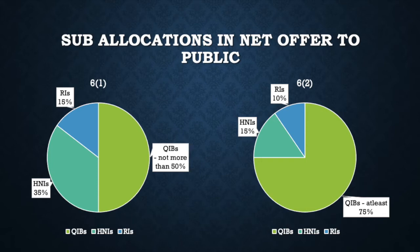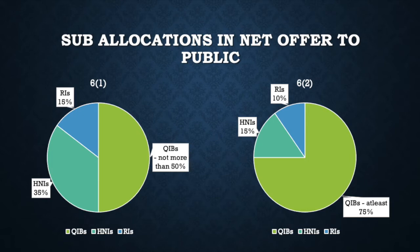Under Regulation 6-2, if I'm doing an IPO, 75% of my shares must be bought by qualified institutional buyers, which means I have to allocate at least 75% of my net offer to public to qualified institutional buyers. Out of the remainder 25%, 15% go to non-institutional investors and 10% only to retail investors. A company going under 6-2 does not meet the financial performance criteria and is therefore deemed a risky proposition, which is why retail investors are restricted to only 10%.